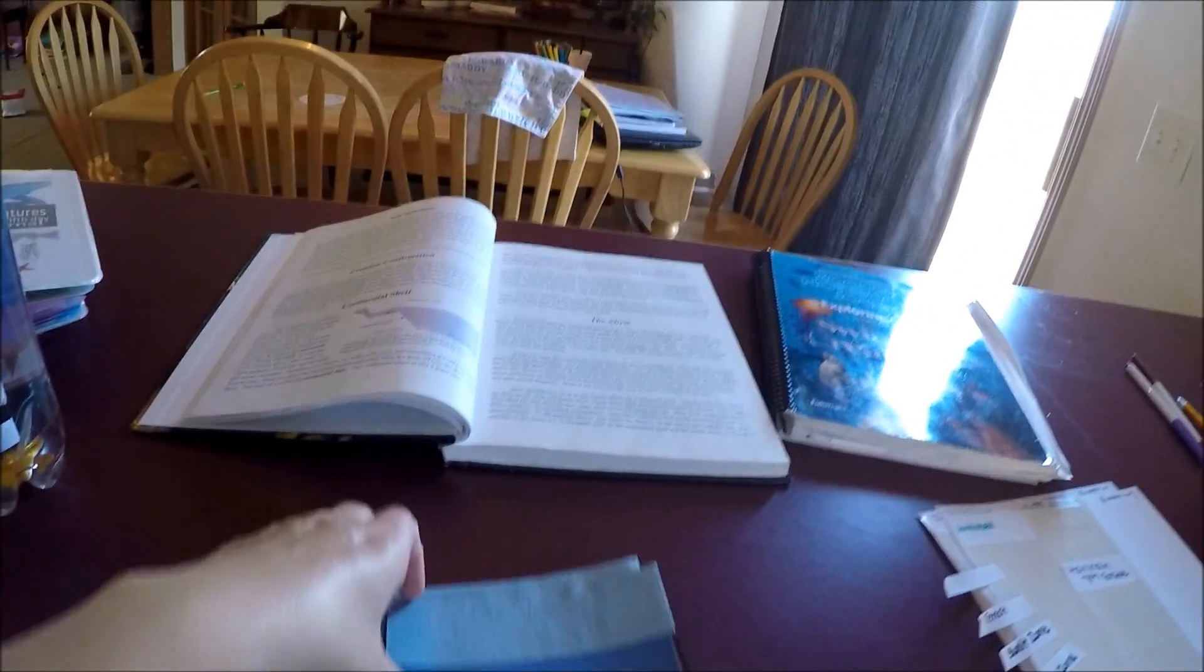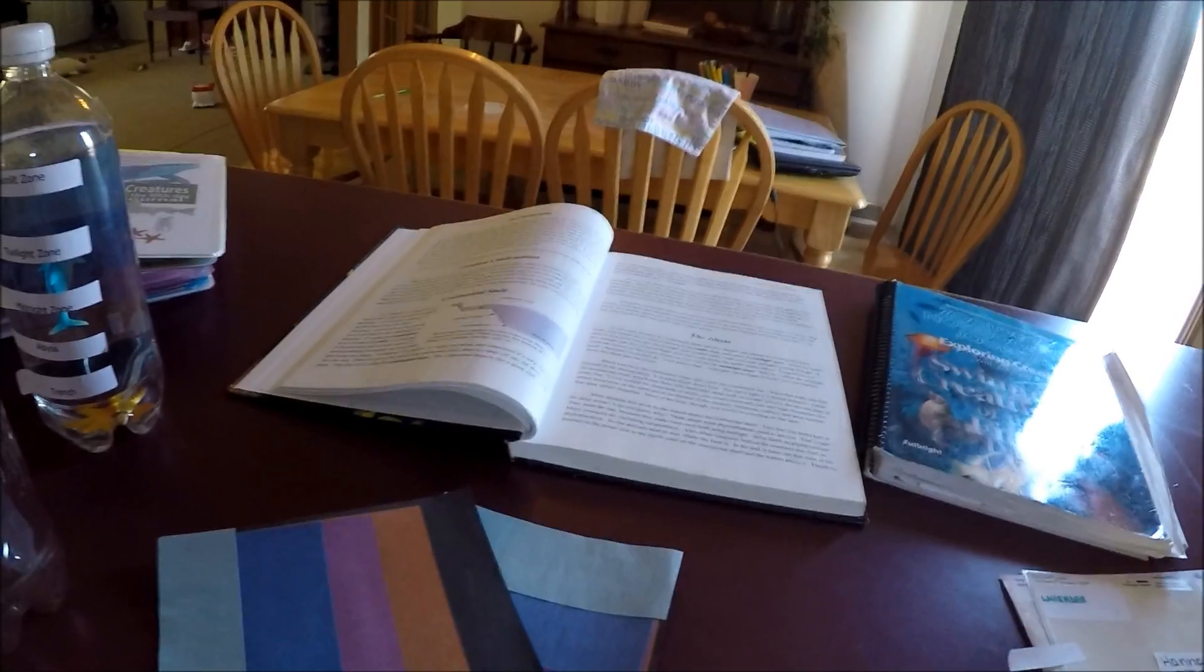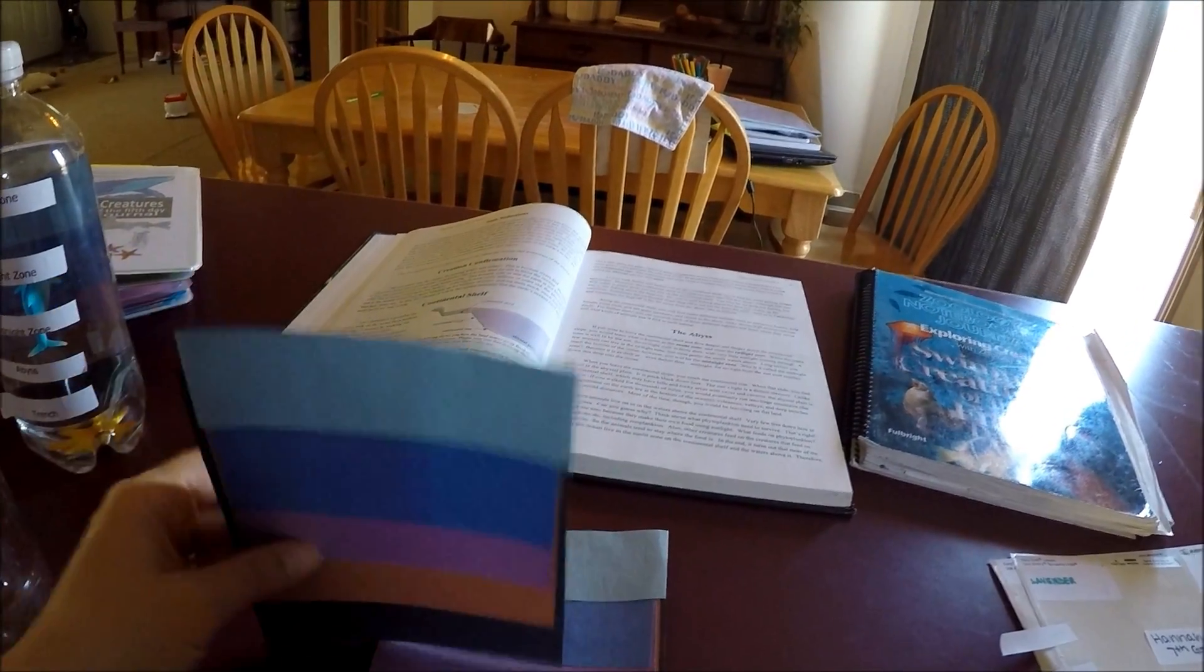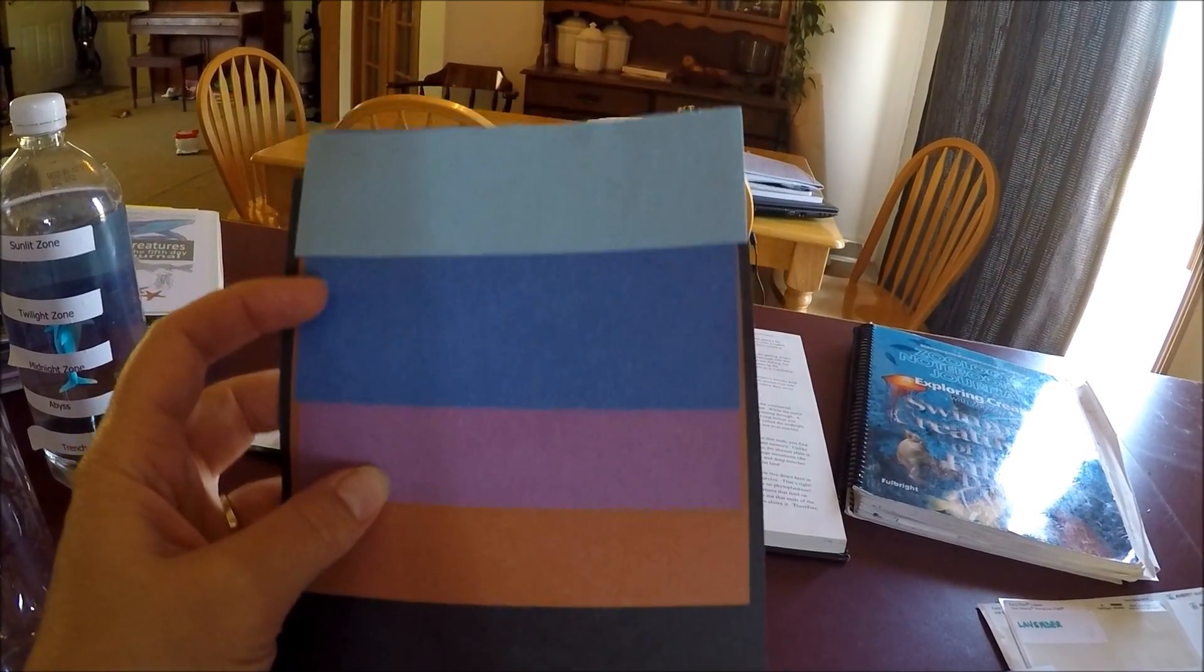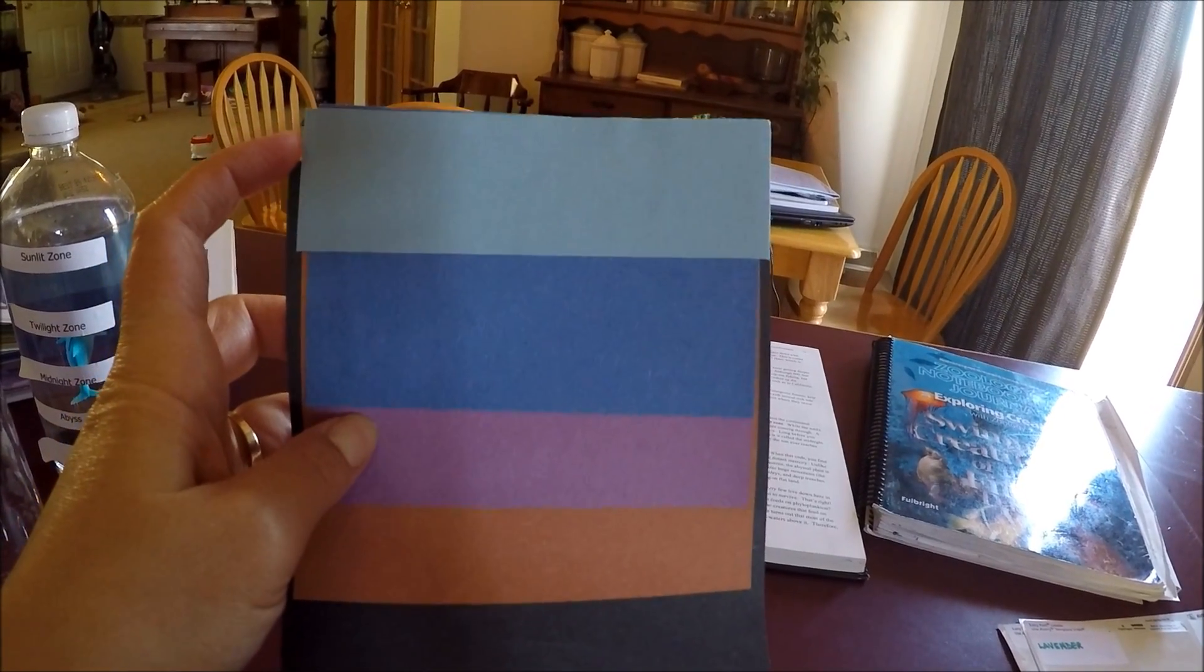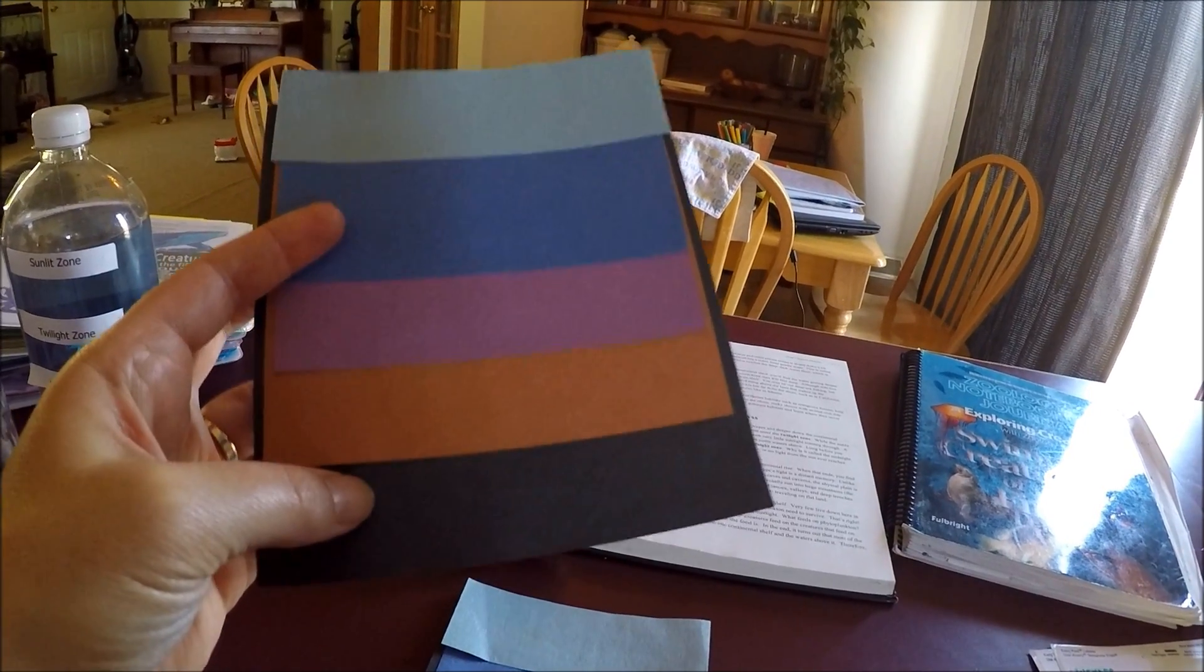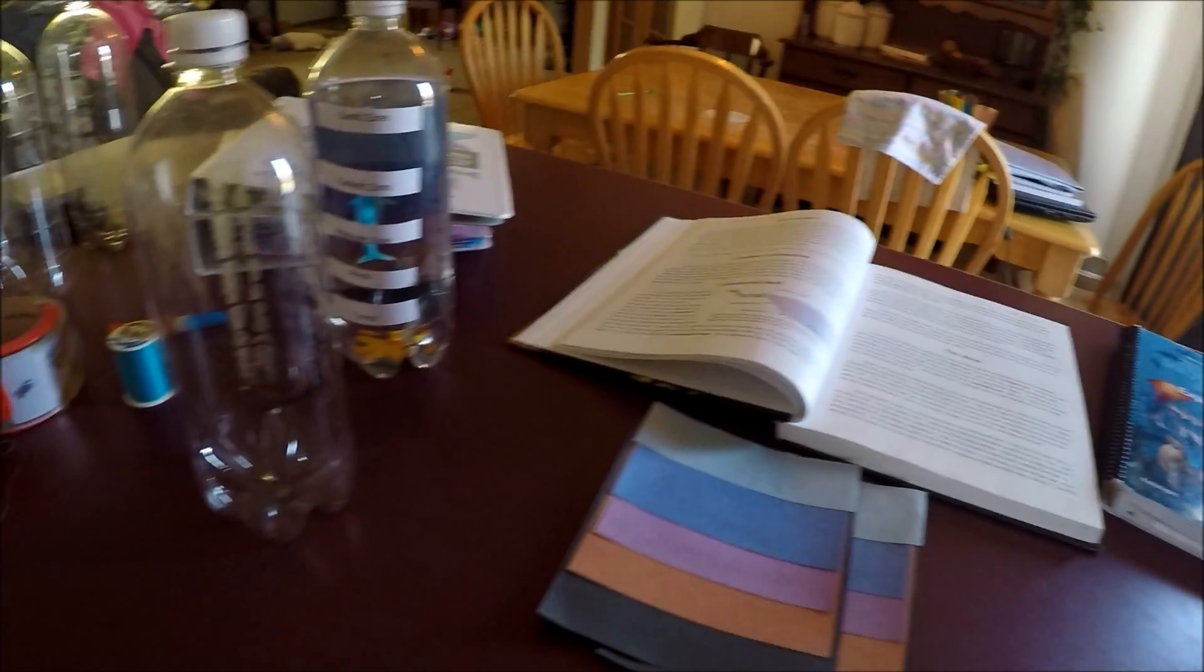You also need construction paper in four or five different colors. From the bottom up, it goes black, brown, purple, dark blue, and light blue. The top zone is the sunlit zone because it's lighter and closer to the surface. The bottom is the trench, which is completely black because no sunlight can reach it.